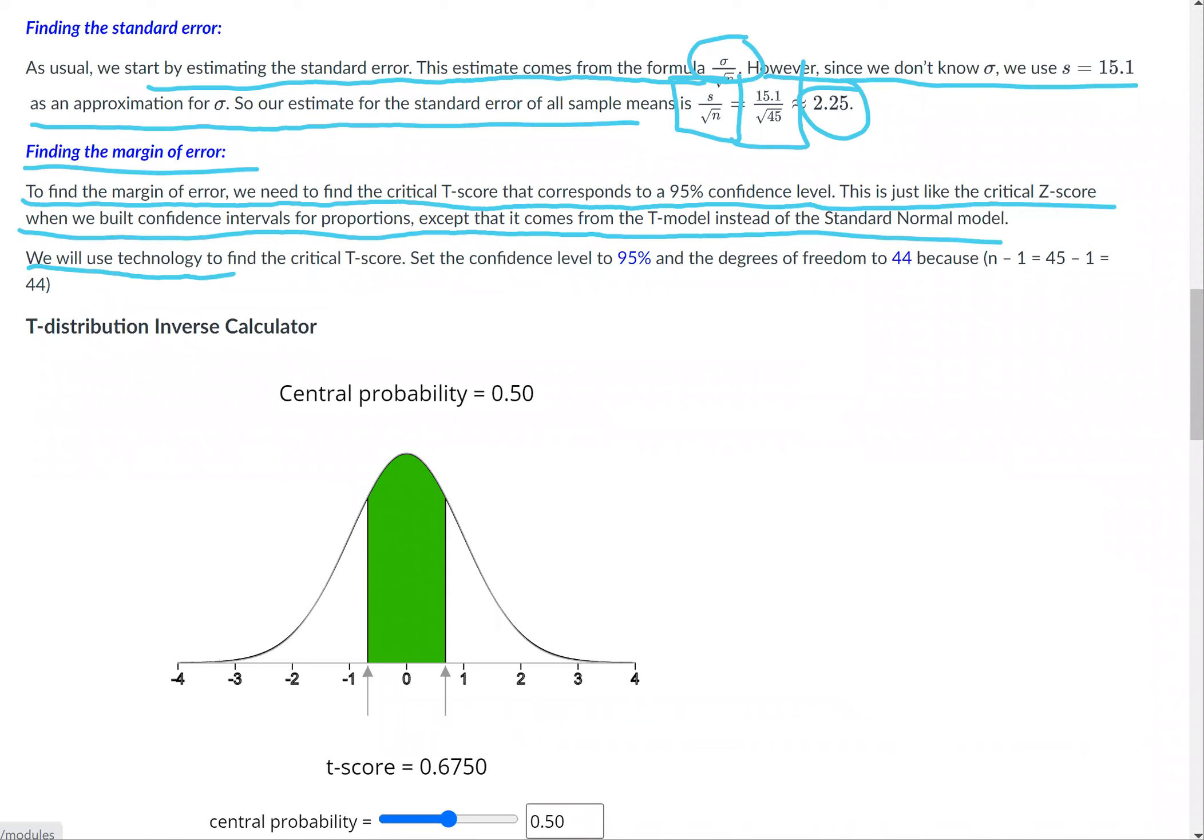We will use technology to find the critical t-score. Set the confidence level to 95%, or in other words, the central probability, 0.95 in decimal form. The degrees of freedom is 44 because degrees of freedom is n minus 1, which is 45 minus 1, or 44.